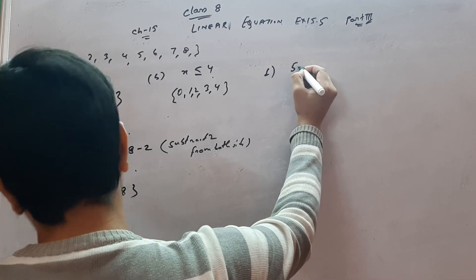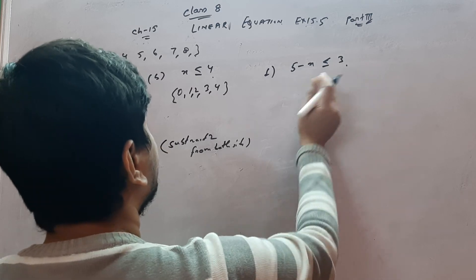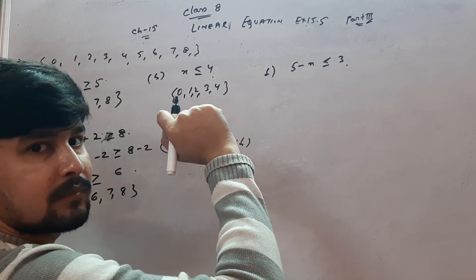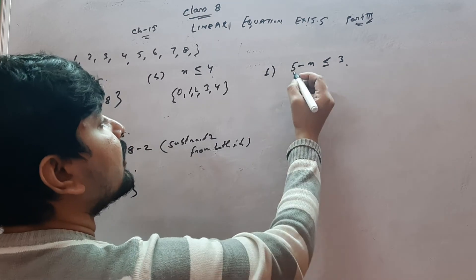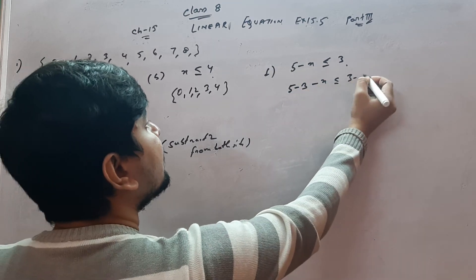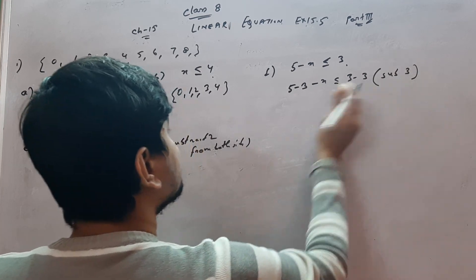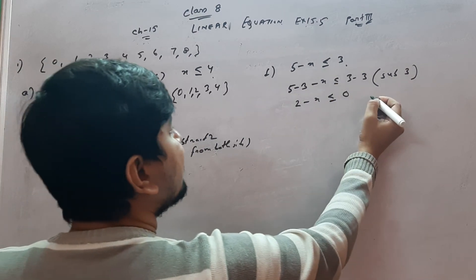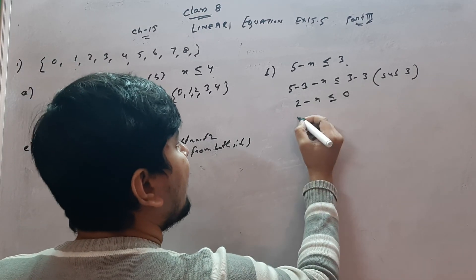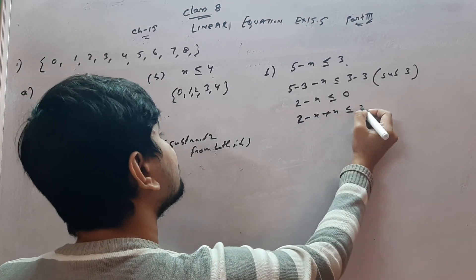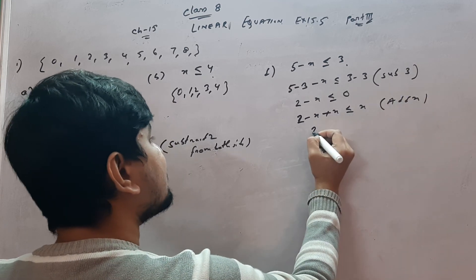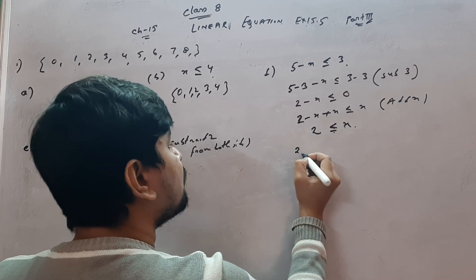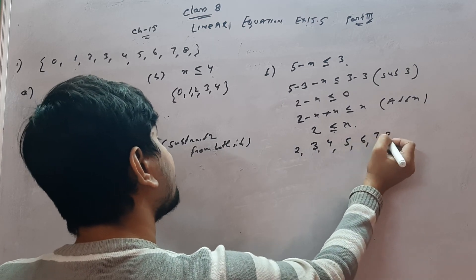For question (d): 5 minus x ≤ 3. Subtract 3 from both sides: 5 minus 3 minus x ≤ 0, giving 2 minus x ≤ 0. Then add x to both sides: 2 ≤ x, meaning x is greater than or equal to 2. So the solution set is {2, 3, 4, 5, 6, 7, 8}.